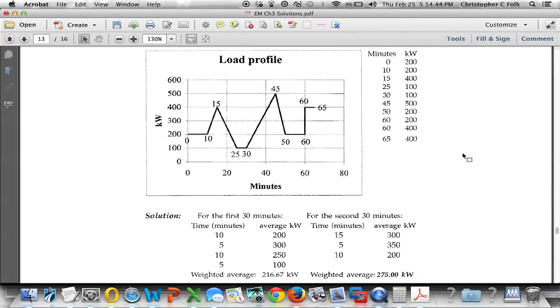So the way to calculate this then is we've got to look at the individual minutes. So scroll down here. We should be able to see what we need. And we're going to try and average these together to find out which of the two 30 minute periods will result in a higher amount of demand. And they give us the answers 216.67 or 275. 275 is the larger number. That is the correct answer.